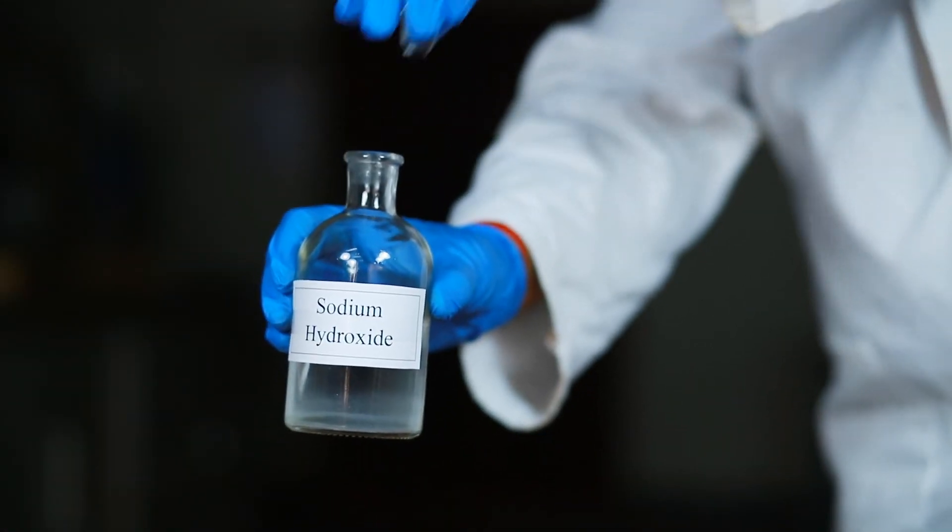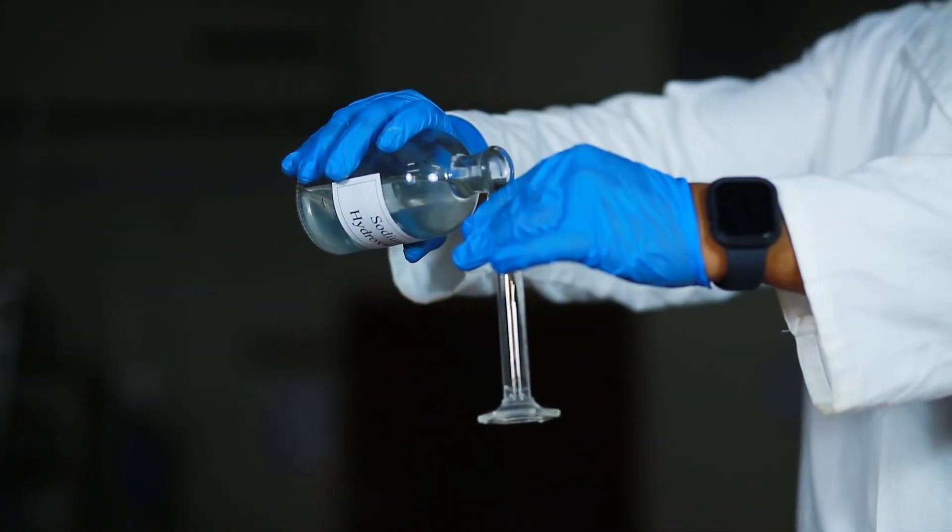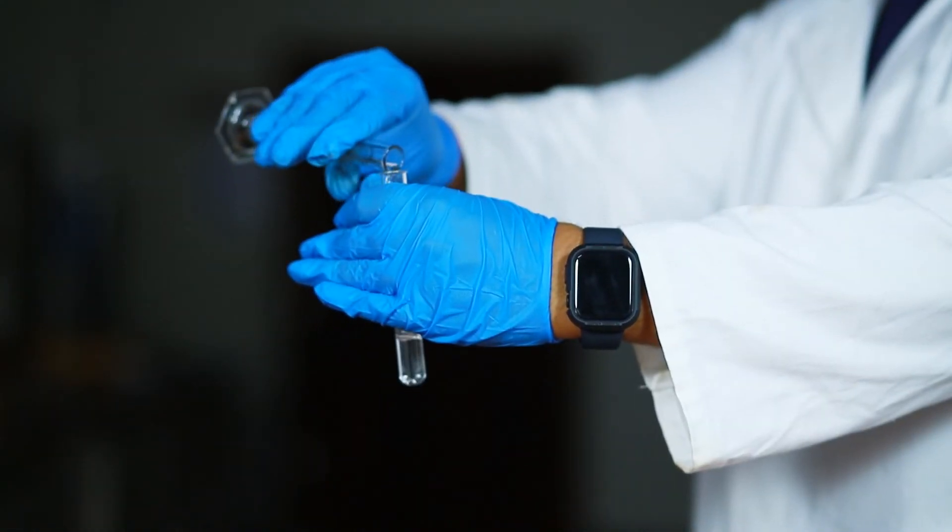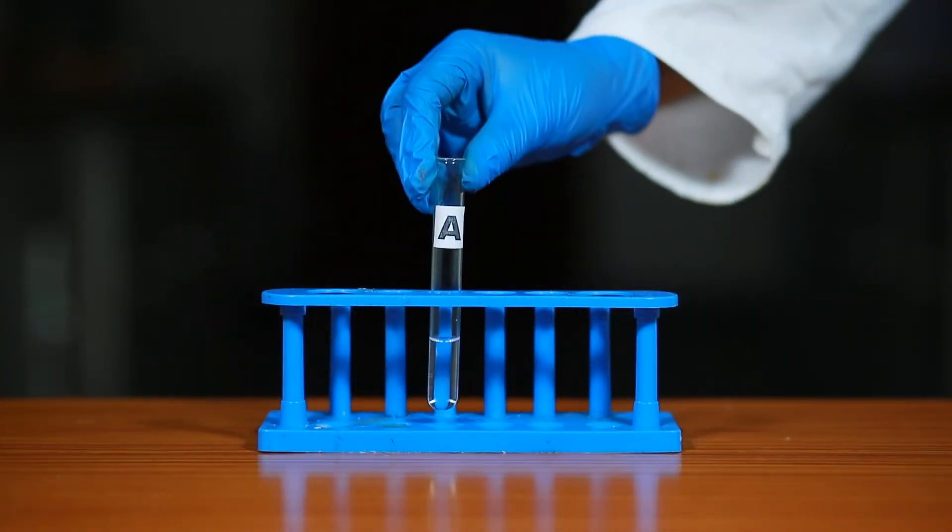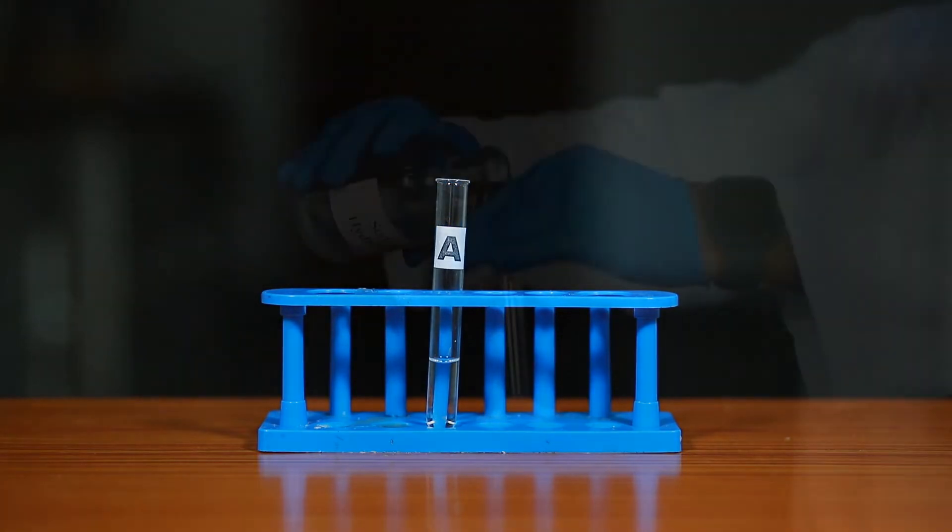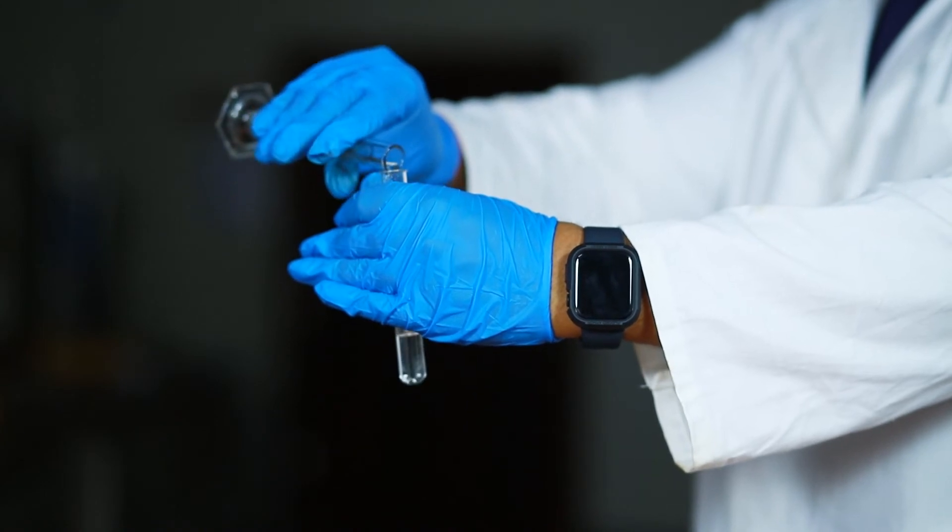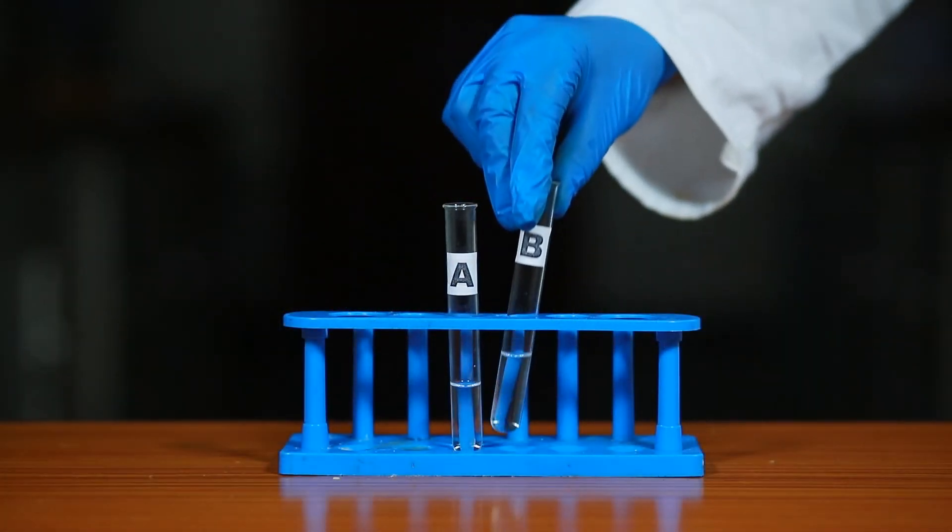Take 5 ml of dilute sodium hydroxide solution in a measuring cylinder and pour it in a test tube and label it as A. Similarly, take 5 ml of dilute sodium hydroxide solution in another test tube and label it as B.